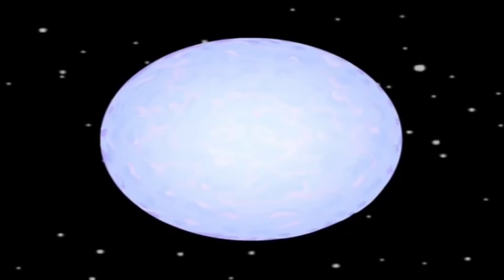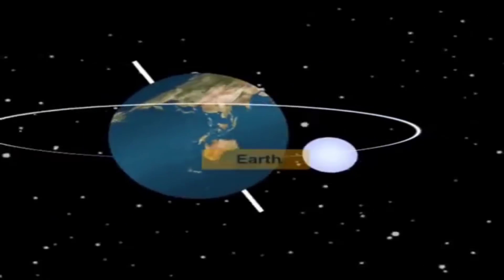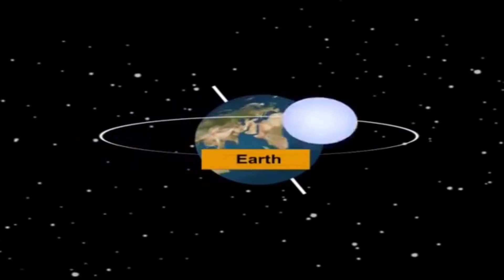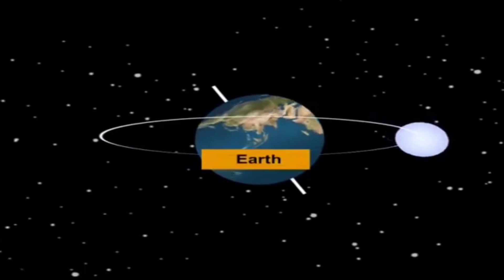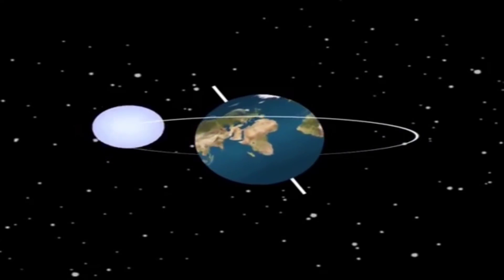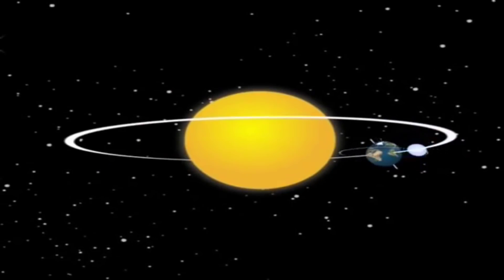What about the motion of the Moon? The Moon, like Earth, also does dual motion. It rotates around the Earth, and while the Earth revolves around the Sun, the Moon follows it.